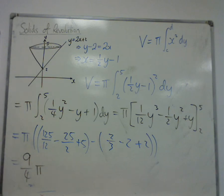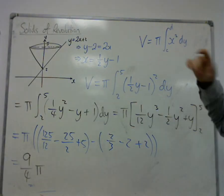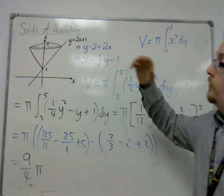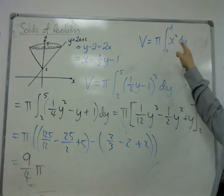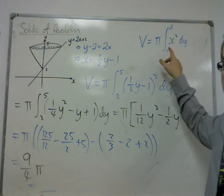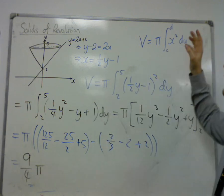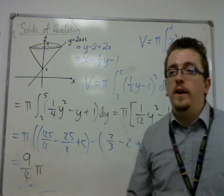And that's how we could deal with rotating a line about the y-axis using this form. So for the x-axis, it was y squared dx. For the y-axis, for rotating about the y-axis, it's x squared dy.